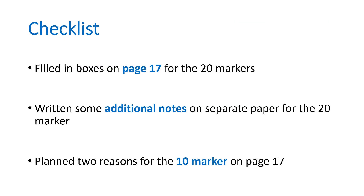Checklist: make sure you've done everything on page 17. Make sure you've filled in all the boxes for the 20-marker. Make sure you've written some additional notes on separate paper for the 20-marker — so the table with points and evaluations and anything else that didn't fit on page 17. Also make sure you've planned two reasons for the 10-marker on page 17, giving any additional notes on separate paper as well.